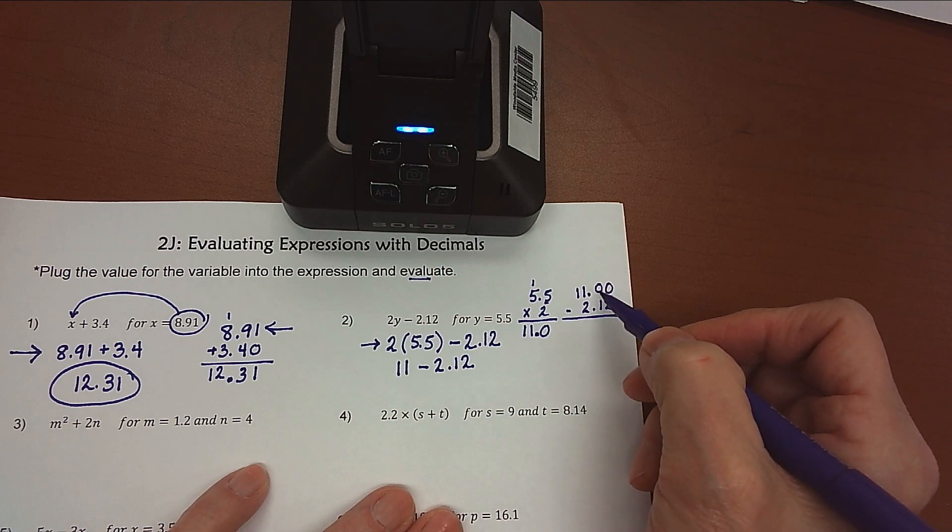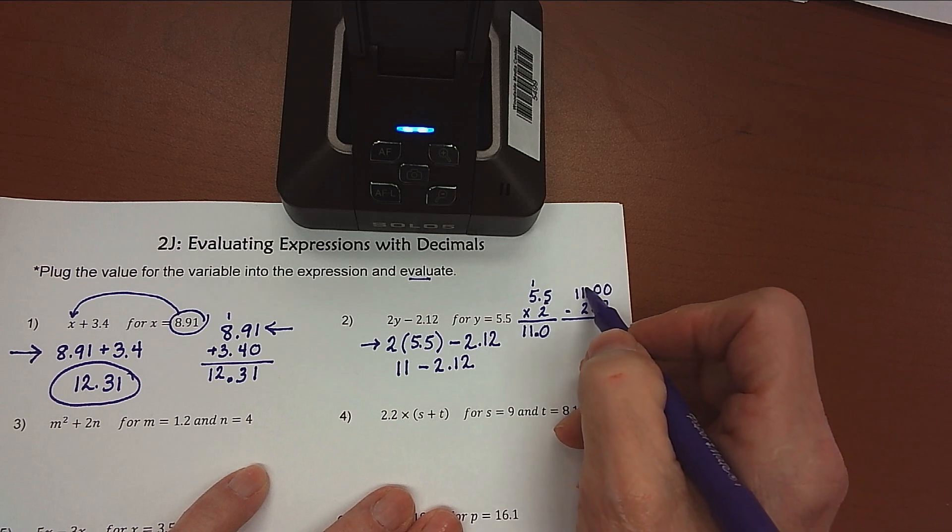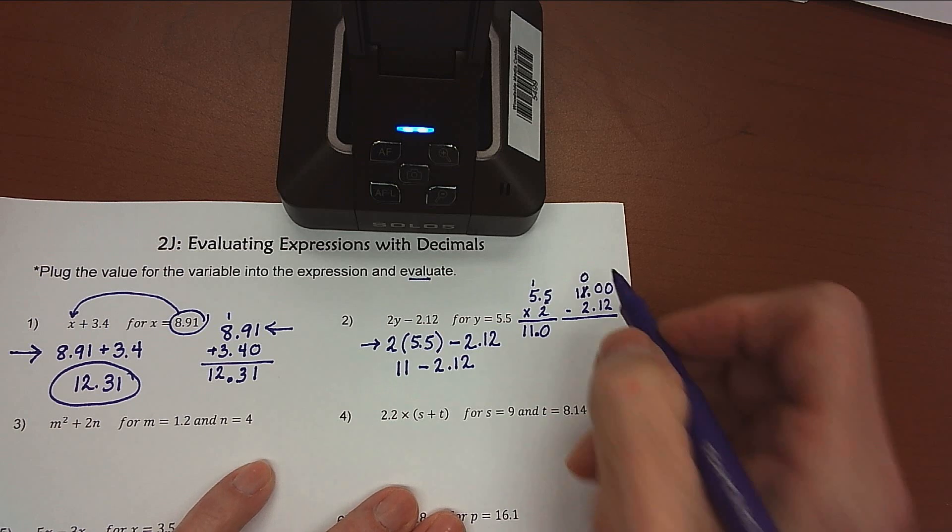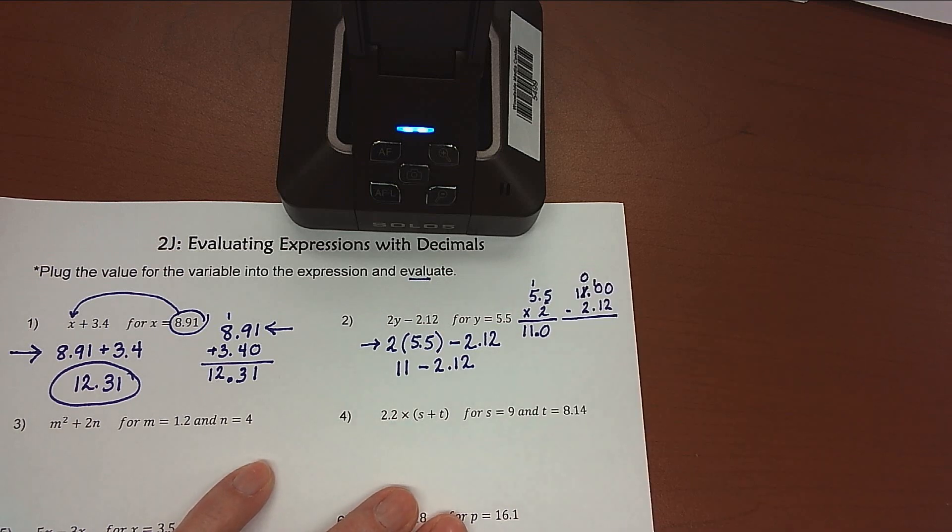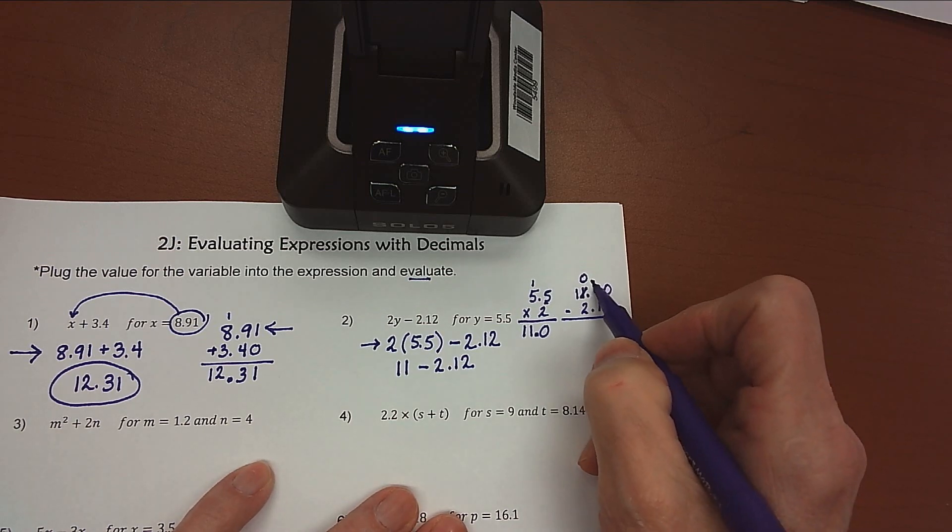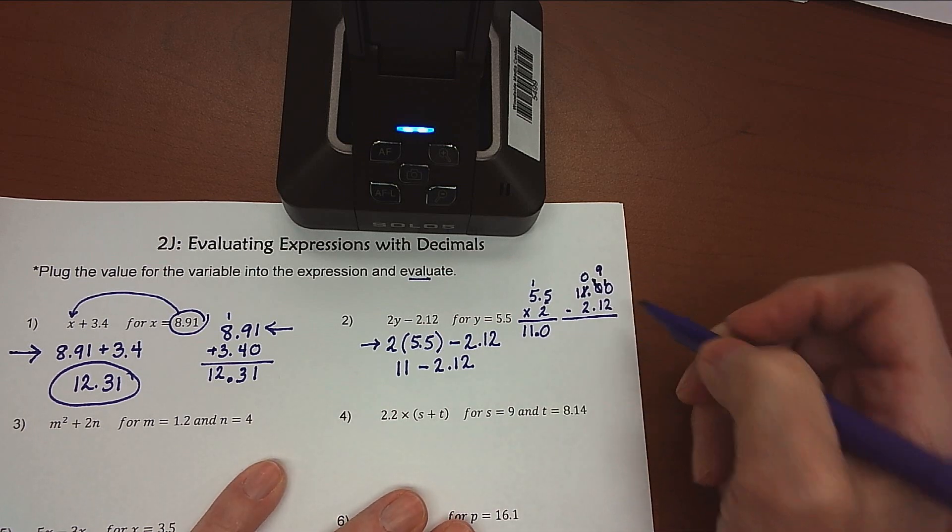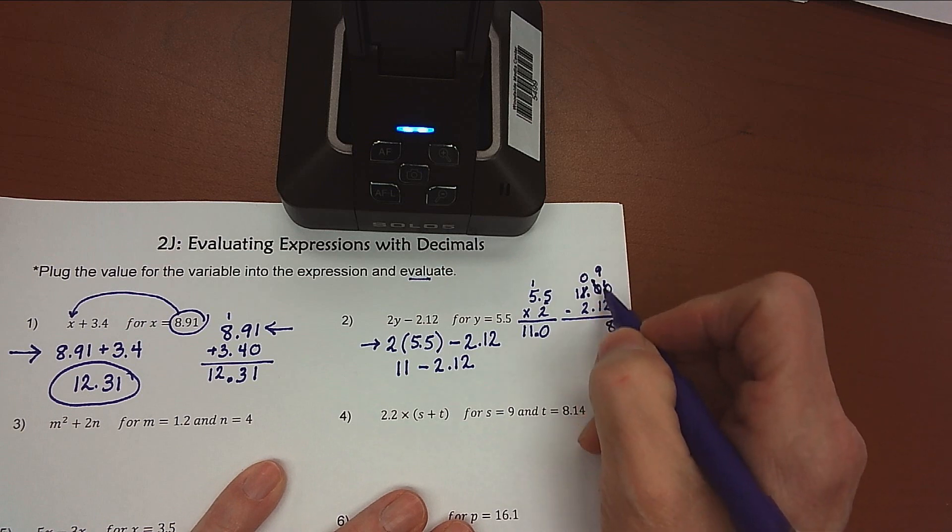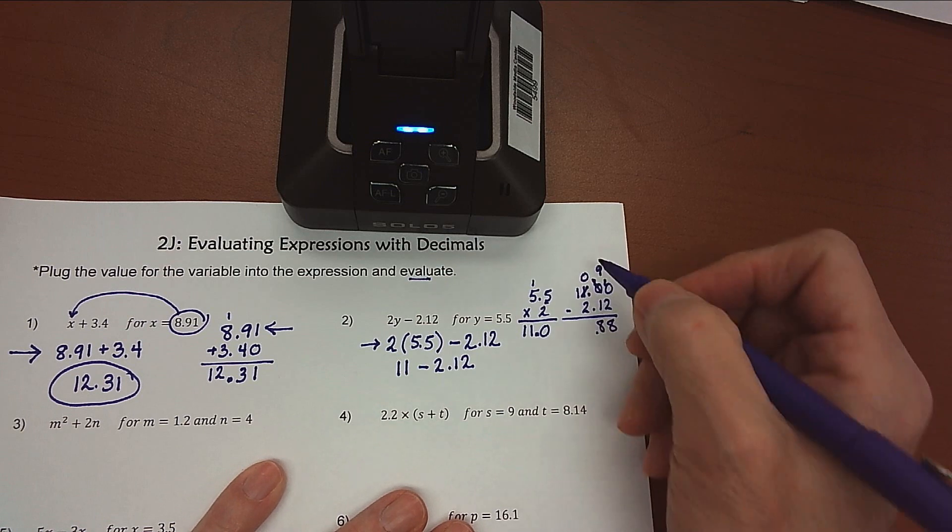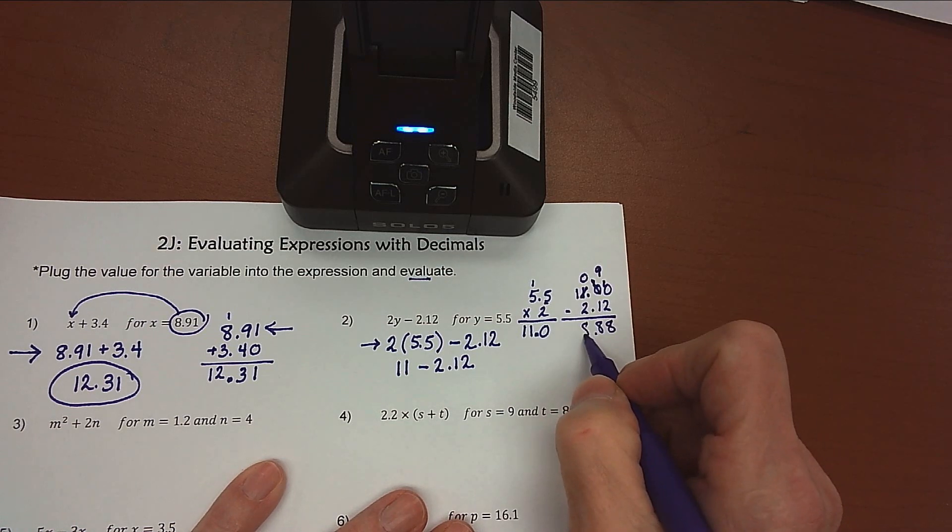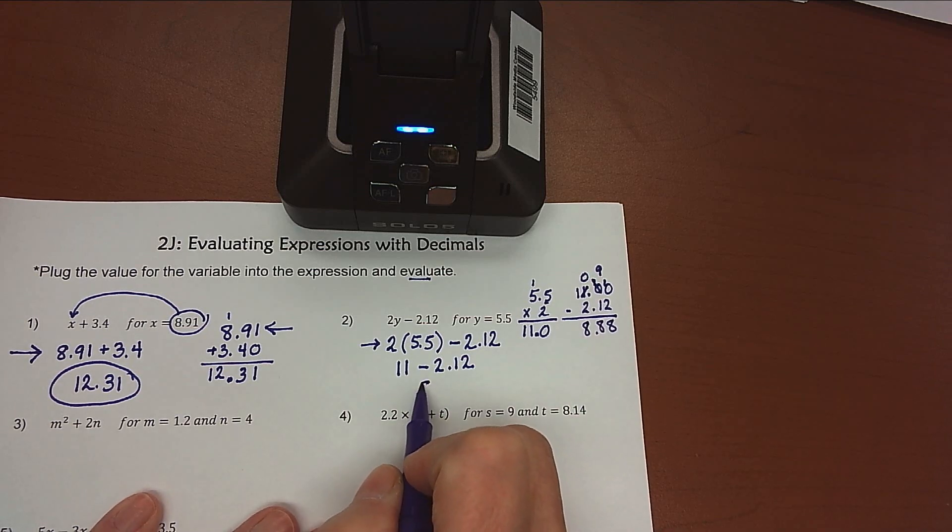so I have to borrow. But there's nothing here to borrow from. So I've got to borrow for this space from here. Borrowing 1, make that a 0. The 1 I borrow makes this a 10. And now I can borrow from this 10, making that a 9, and this a 10. 10 minus 2 is 8. 9 minus 1 is 8. And then 10 minus 2 is 8. And so my answer is 8.88.